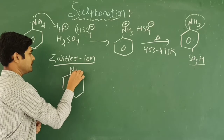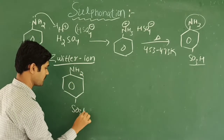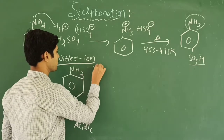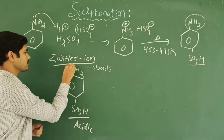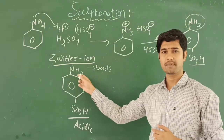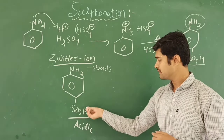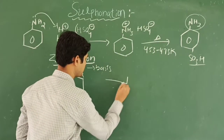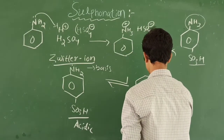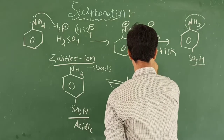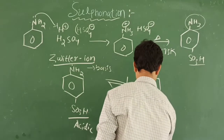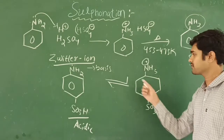Here aniline reacts with SO₃H. This part acts as acidic in nature and this part is basic in nature. The acid donates its protons — and amino groups are basic groups — so the H⁺ is given to the amino group. That forms the zwitterion: NH₃⁺ on one side and SO₃⁻ on the other. This is called an interconversion reaction.